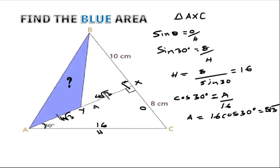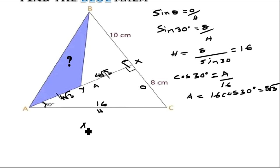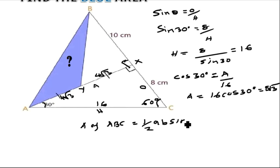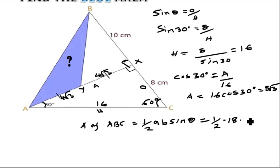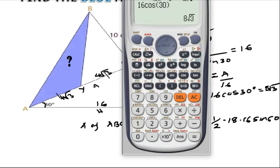Now we want the area of triangle ABC. Since the angle at A is 30° and the angle at X is 90°, the angle at C must be 60°. The area formula is one half times two sides times sine of the included angle. Taking theta as 60°, the two sides from C are CB = 8 + 10 = 18 and CA = 16. So the area is ½ × 18 × 16 × sin 60°.